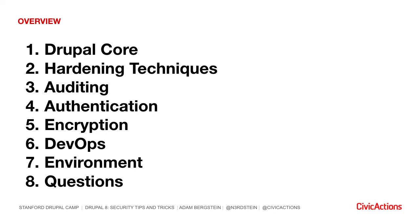A little overview of the talk: first we're going to start with core, next we're going to look at other hardening techniques, auditing, authentication, encryption, DevOps, your environment, and questions at the end. We've got a lot to go, folks, and I promise I will be brief. Let's look at core.